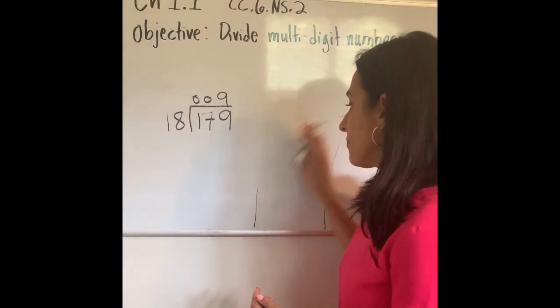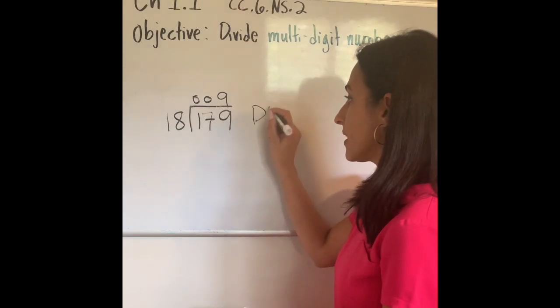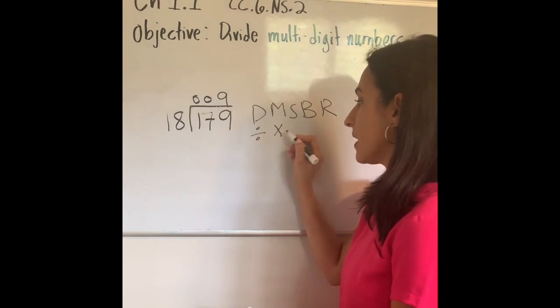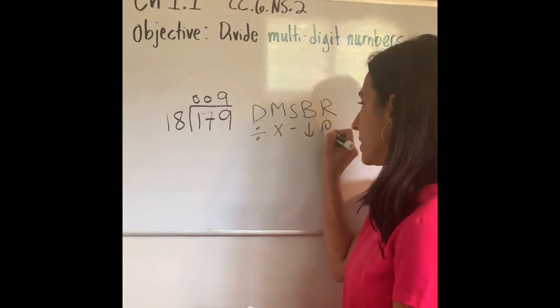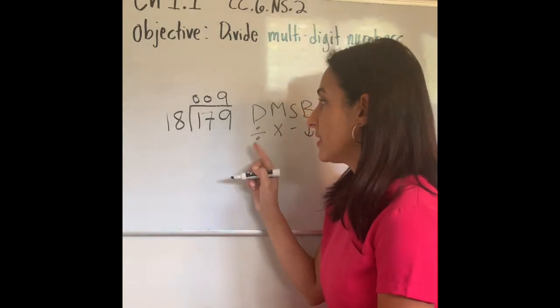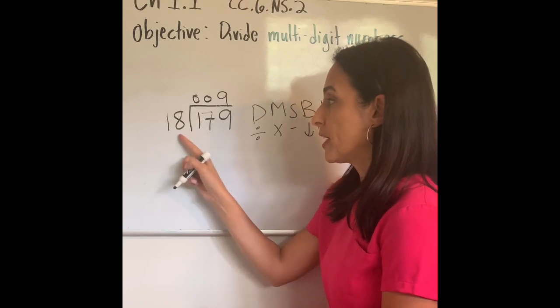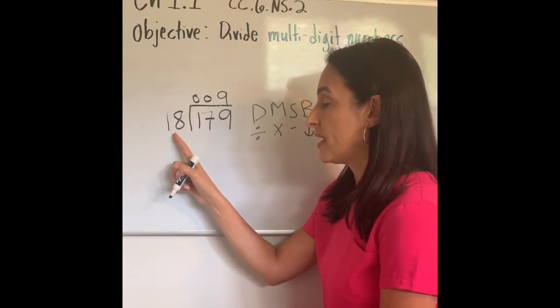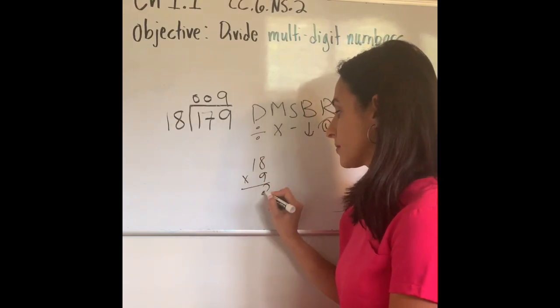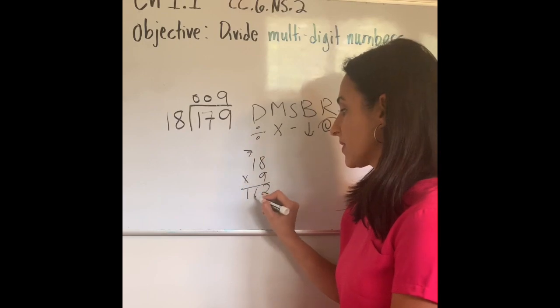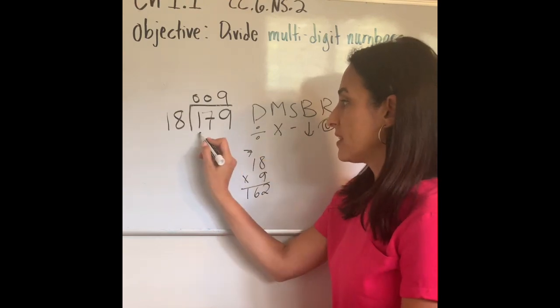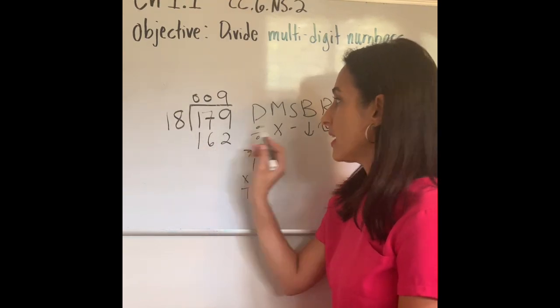Now I like to use the acronym DMSBR: divide, multiply, subtract, bring down, and repeat—my steps to solve this division problem. I already did division: 179 divided by 18 should be 9 times. Now we're going to do 9 times 18. We did 9 times 18; let me do it again—it's 162. So we just did multiplication. We did division, multiplication. I'm going to write down 162 below 179, and I'm going to subtract.